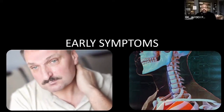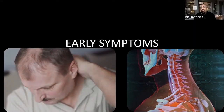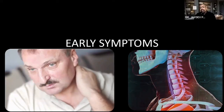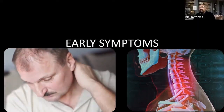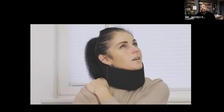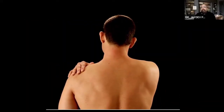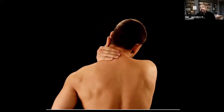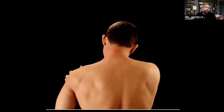Early in spondylosis, as the body detects changes in disc height, it puts the neck muscles into spasm, causing pain. Neck pain is therefore the earliest symptom. Importantly, this pain is not always restricted to the neck — it can spread between the scapulae, into the shoulder, into the occipital region, and sometimes even into the temporal region.